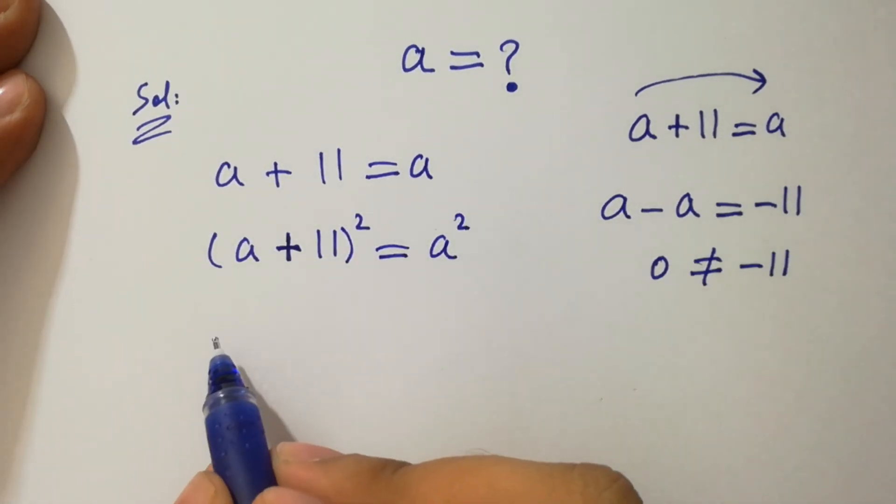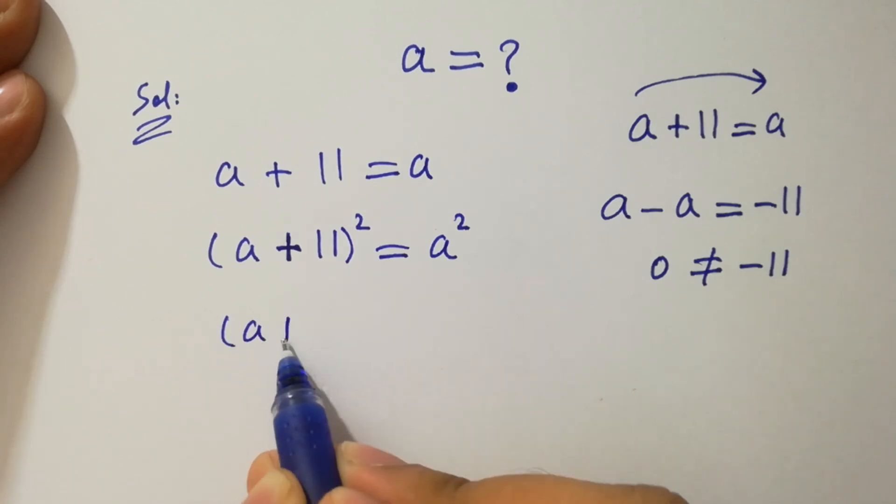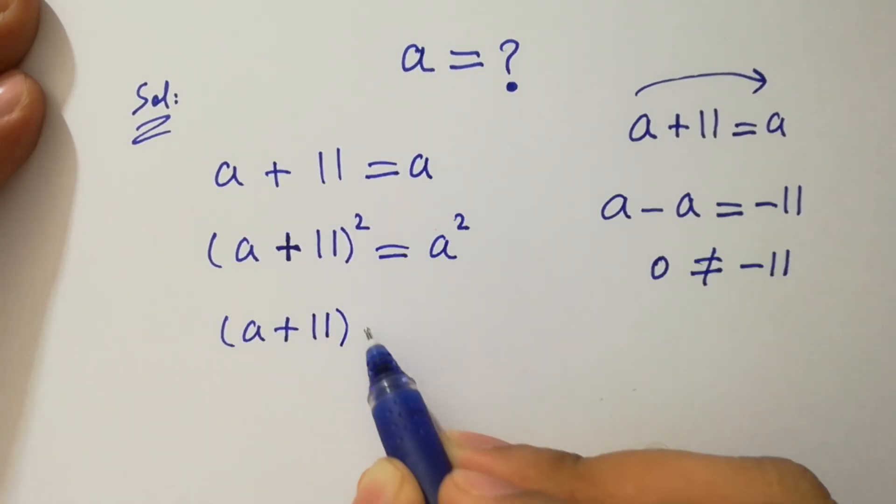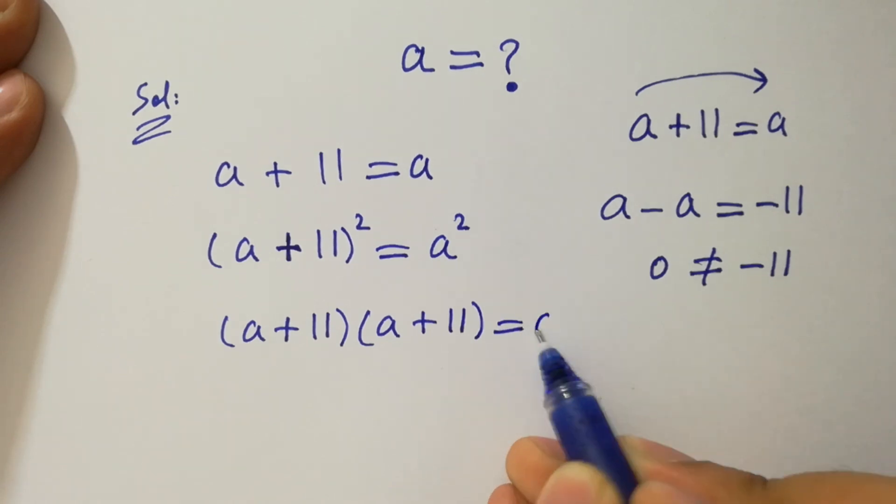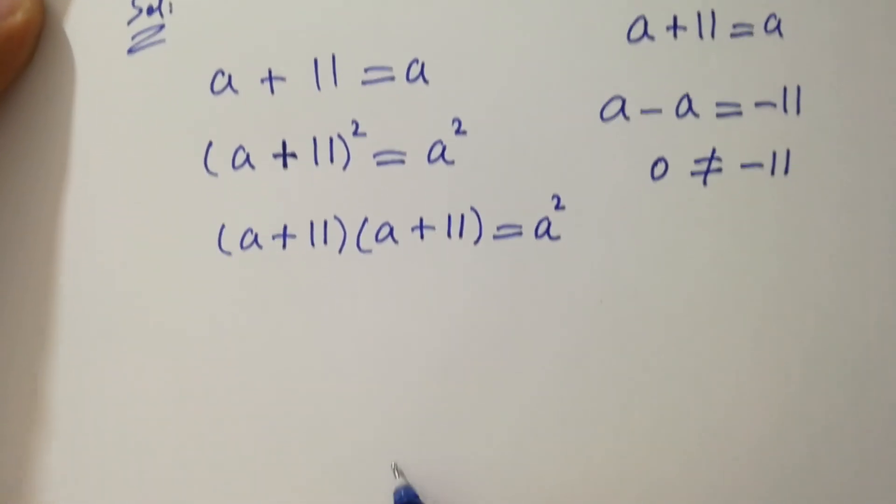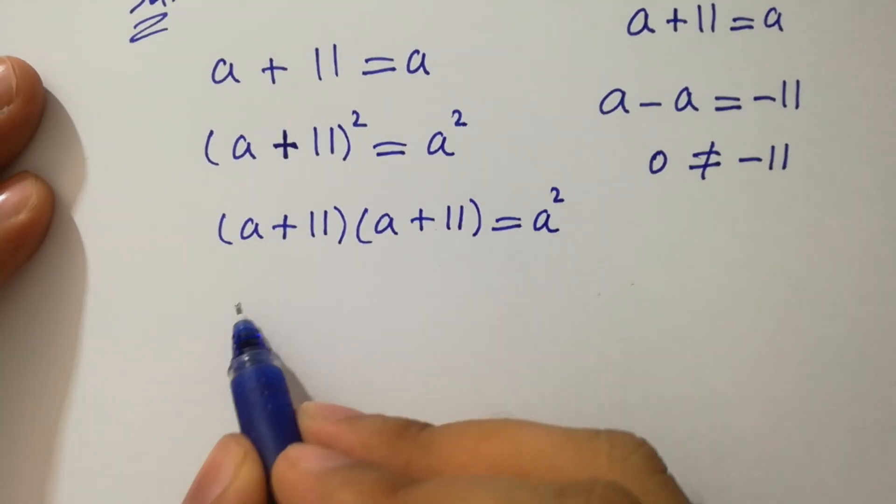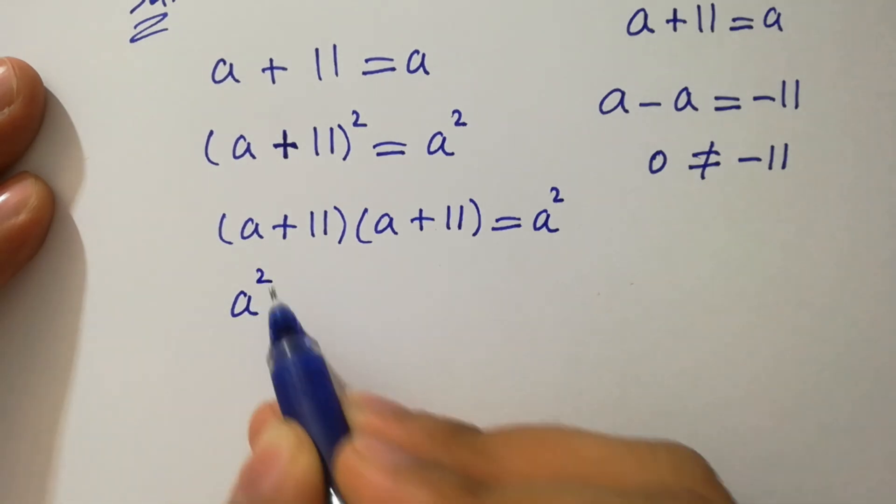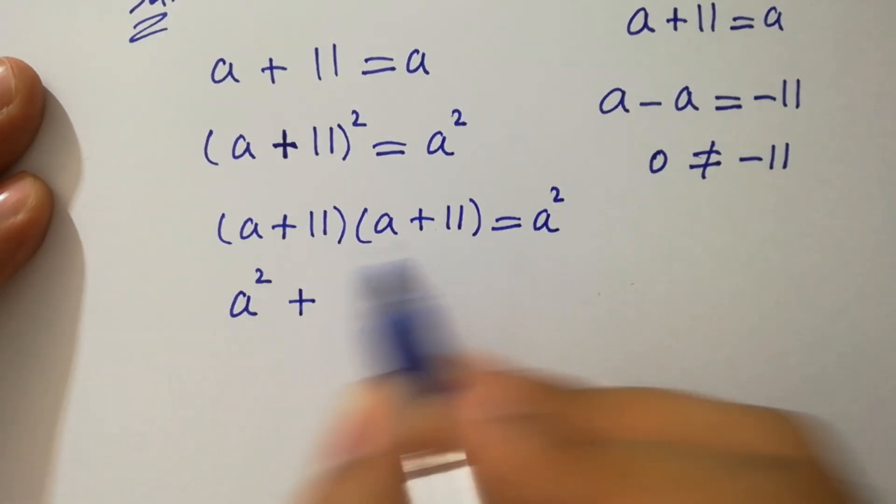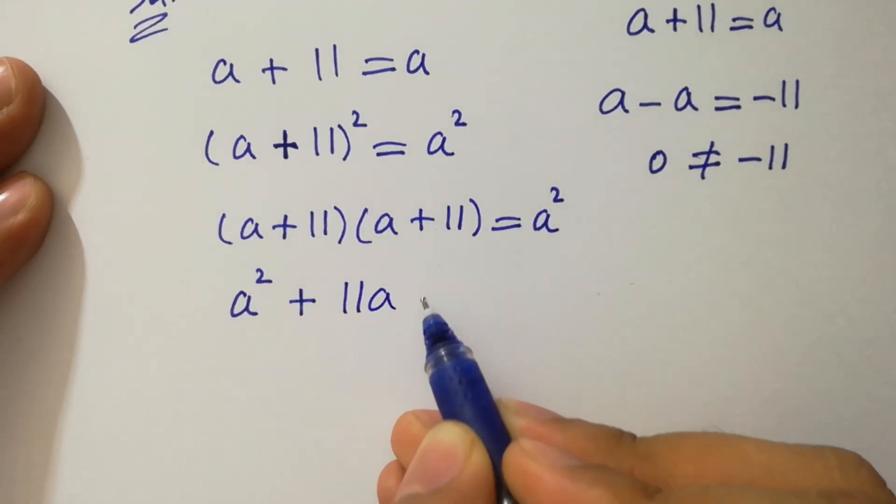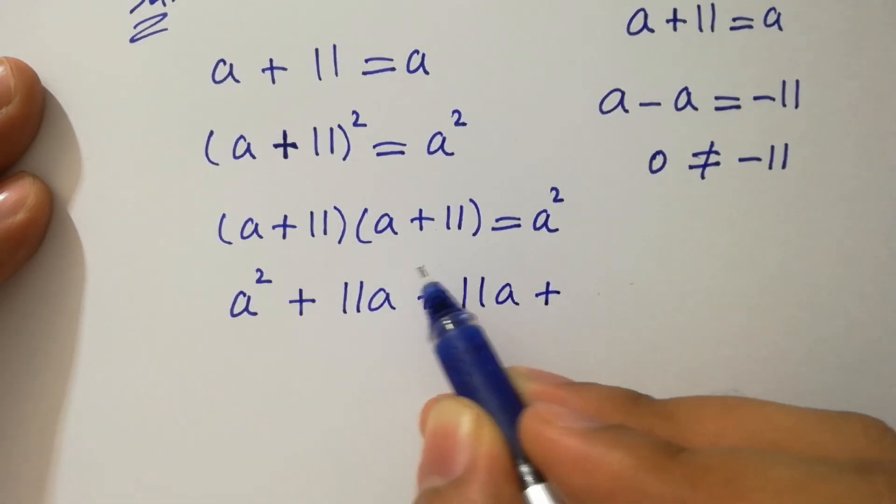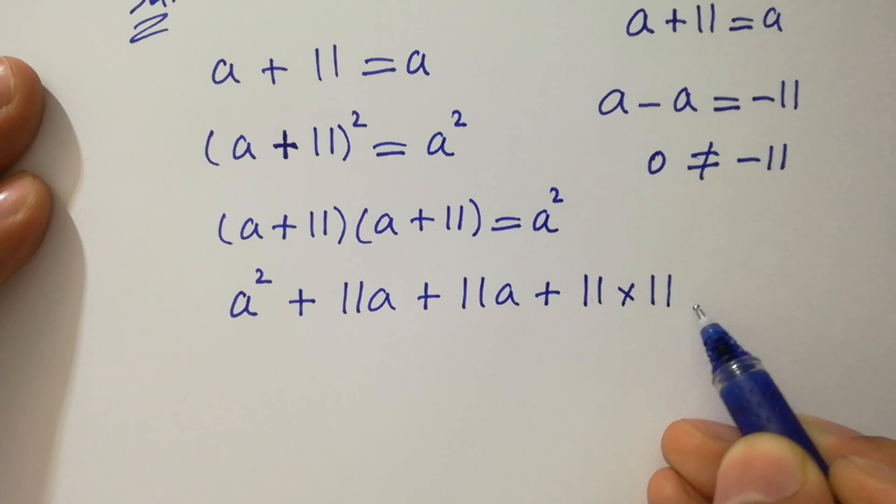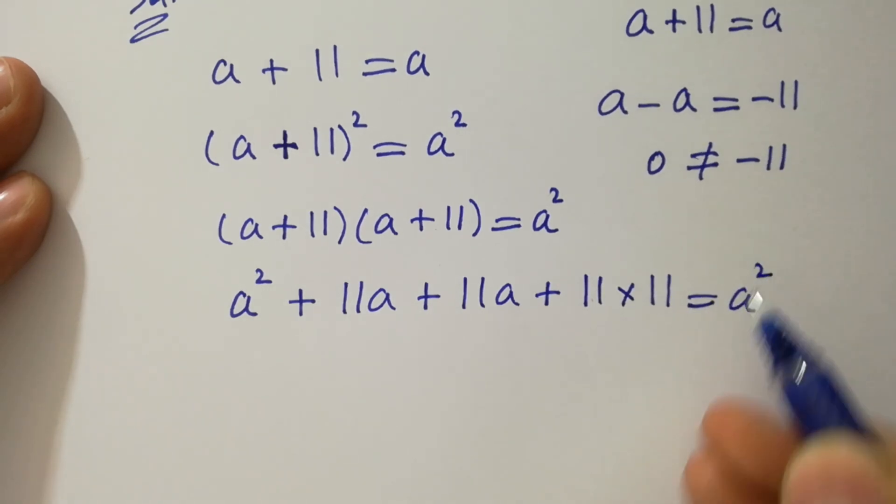Which is same as a plus 11 times a plus 11 equal to a square. Simplify this: a times a, a square plus 11a plus 11a plus 11 times 11 equal to a square.